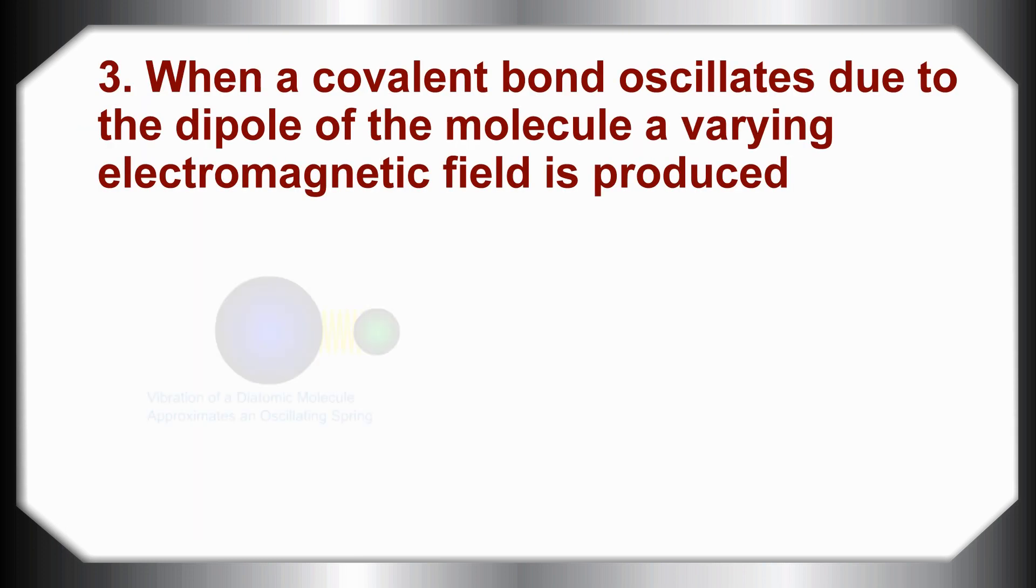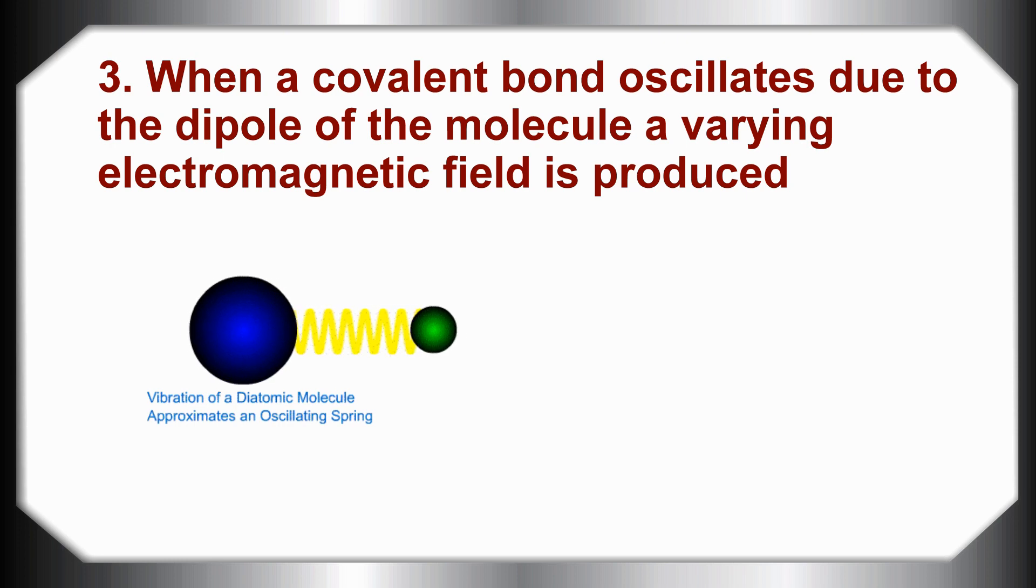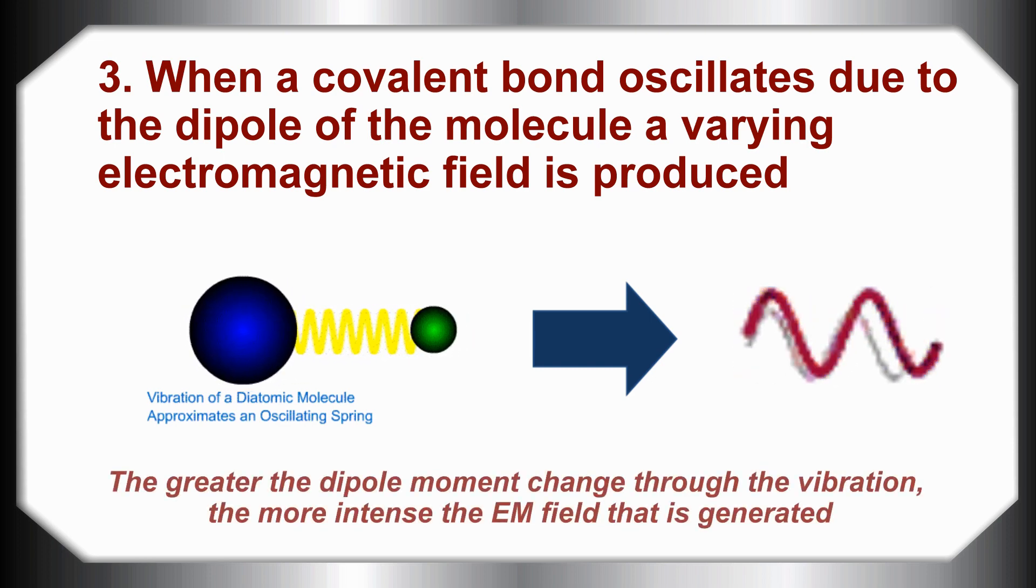When a covalent bond oscillates due to the dipole of the molecule, a varying electromagnetic field is produced. The greater the dipole moment change through this vibration, the more intense the electromagnetic field that will be generated.